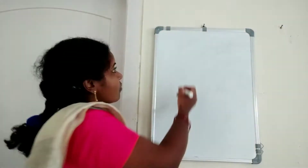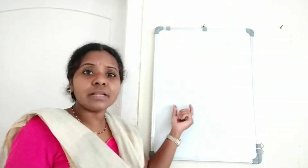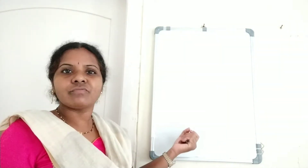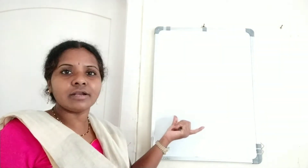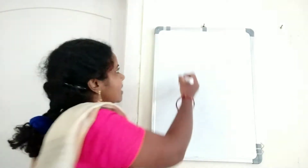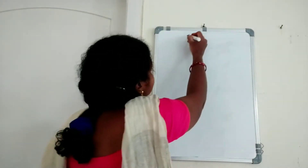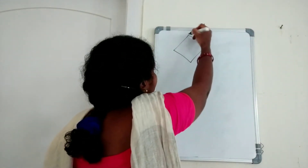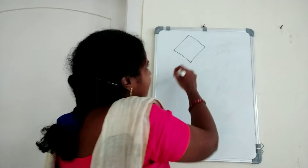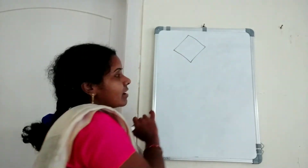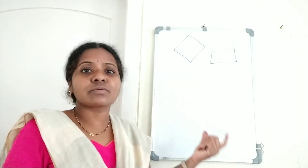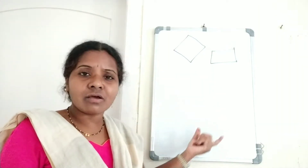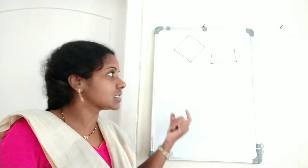A quadrilateral is a simple closed figure bounded with four line segments. All rectangles, squares, parallelograms, and trapezium — these are all different types of quadrilaterals.